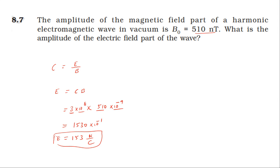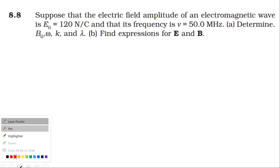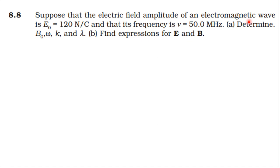Next problem: suppose the electric field amplitude of an electromagnetic wave is E₀ = 120 newton per coulomb, frequency is 50 megahertz. Find B₀ and the expressions for E and B. To find B₀, we use the relation c = E₀/B₀, so B₀ = E₀/c.